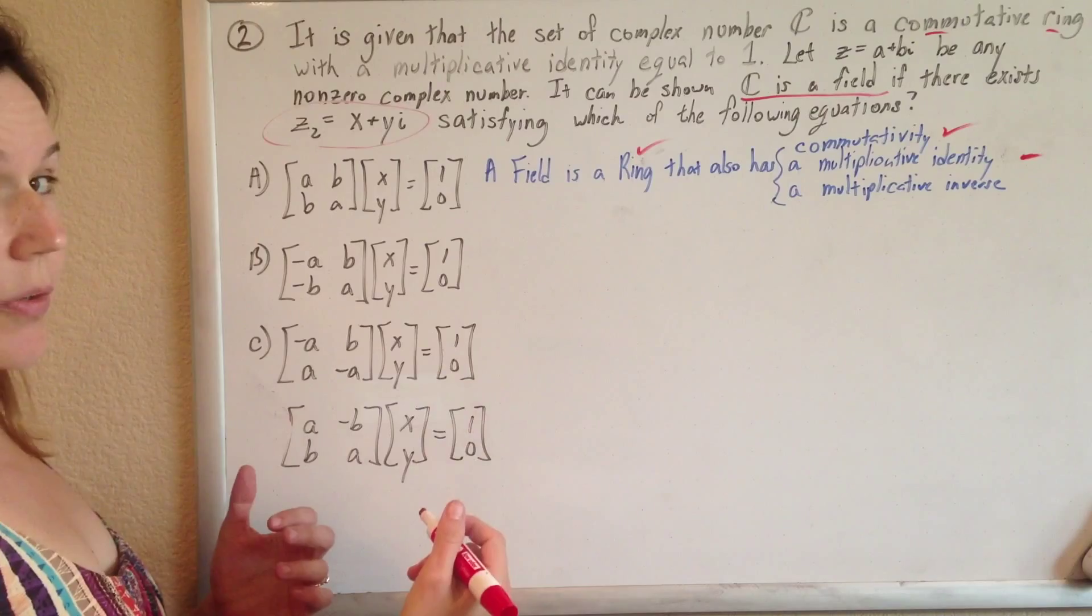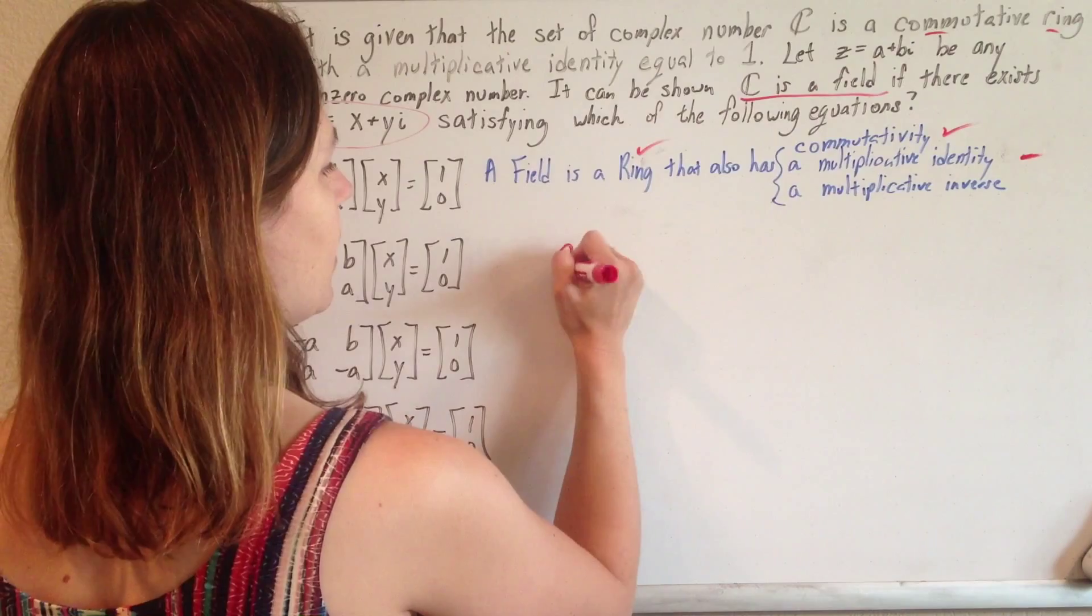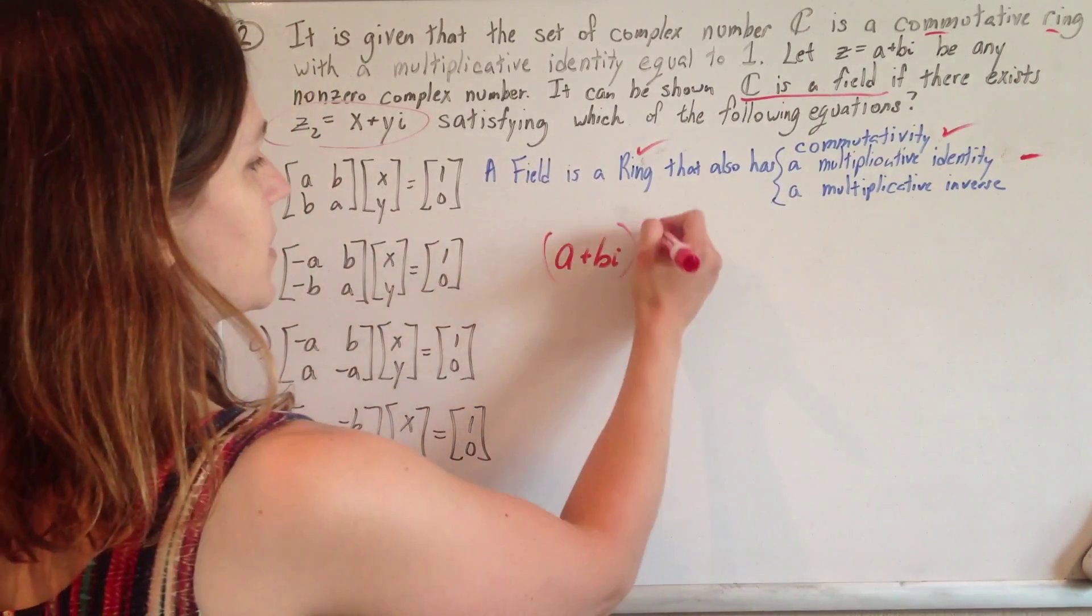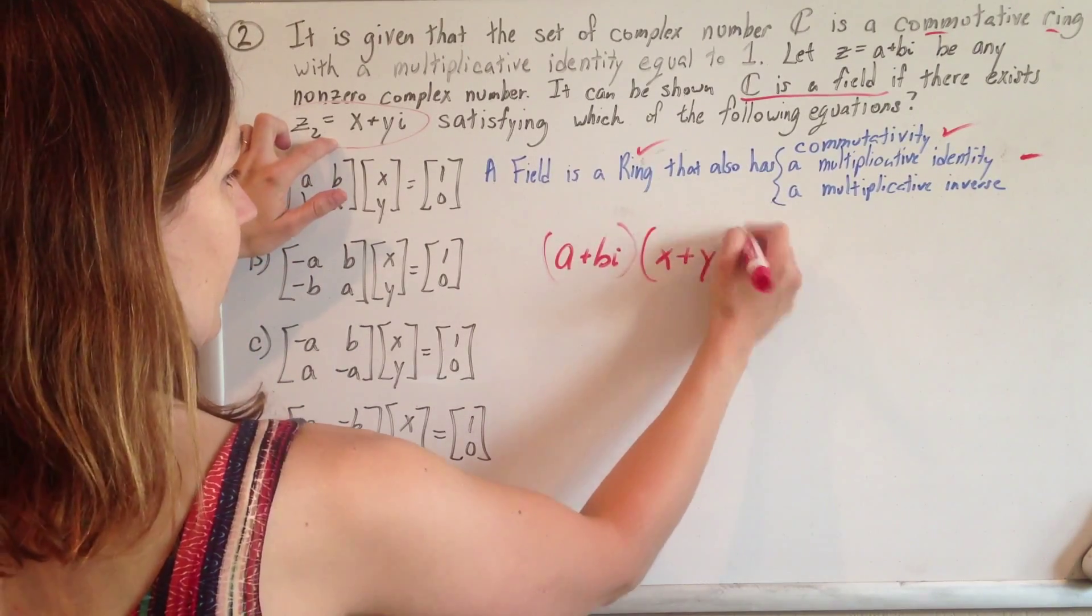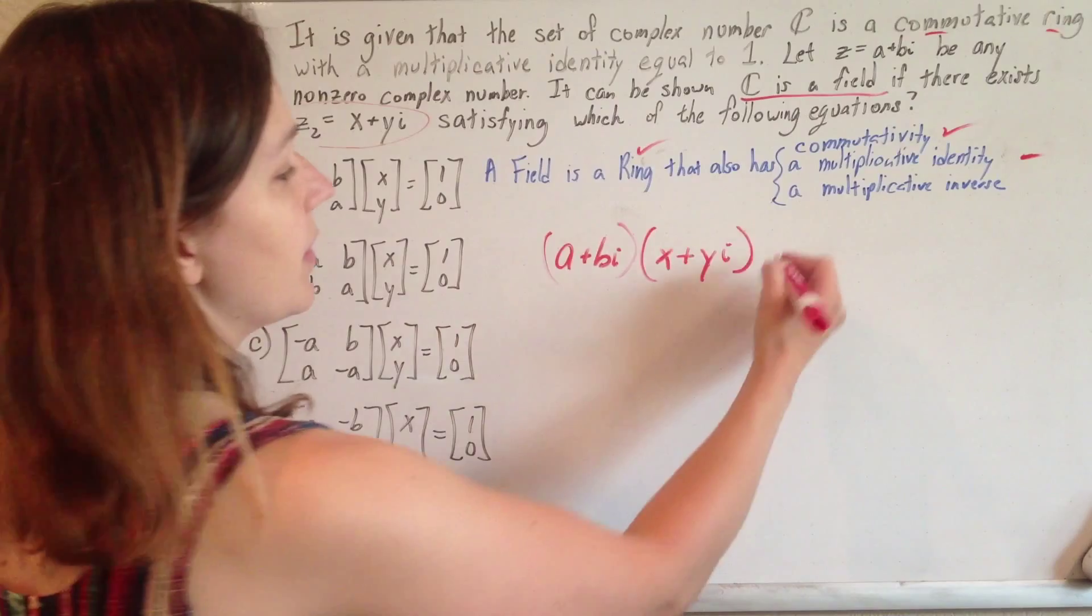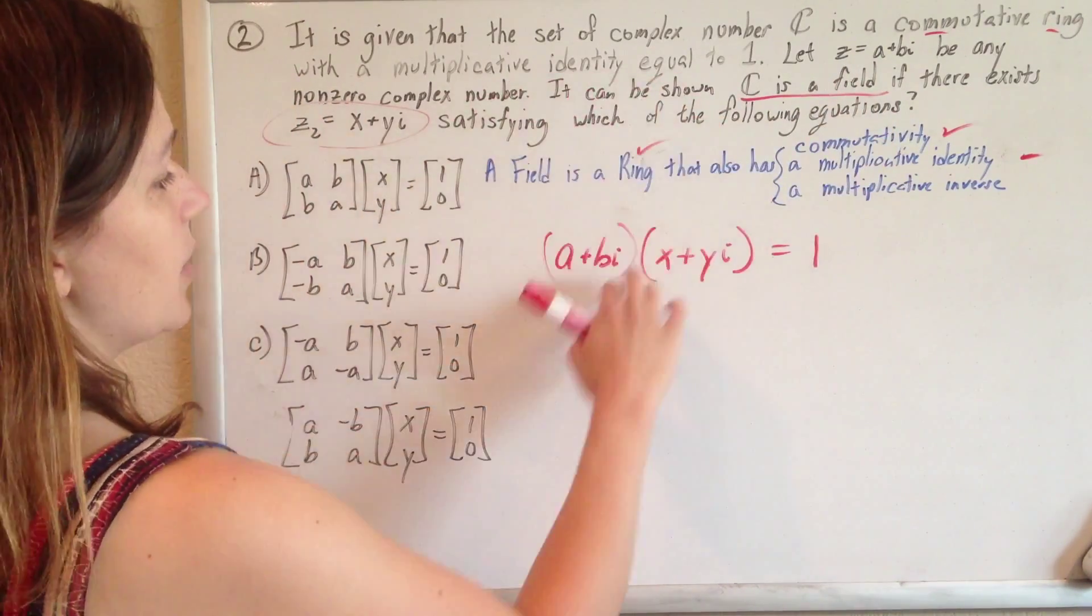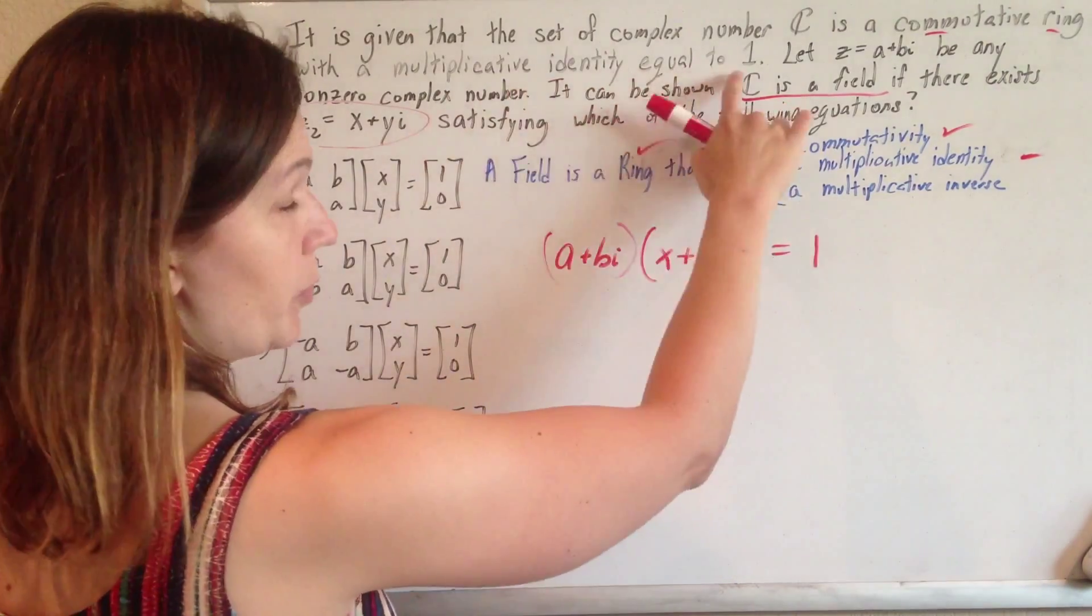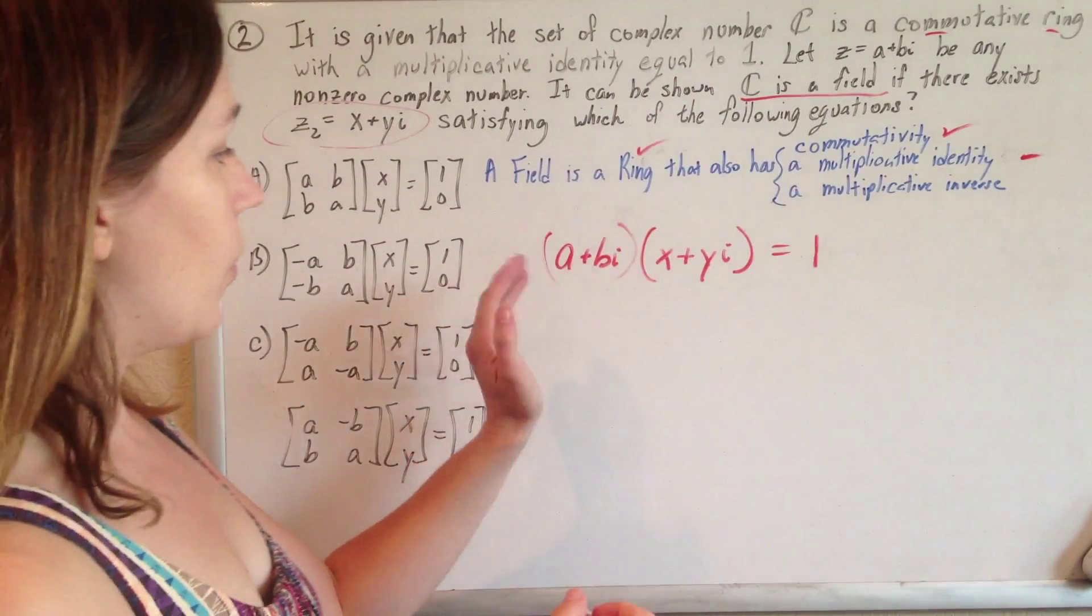How do we do that? Well, if we take any number a plus bi in a set, if you multiply it by the multiplicative inverse, which is x plus yi, it should equal the identity, which is 1. So if you take any number of the set, multiply it by the inverse, it will bring you back to the identity, which is 1. So we're trying to show this.